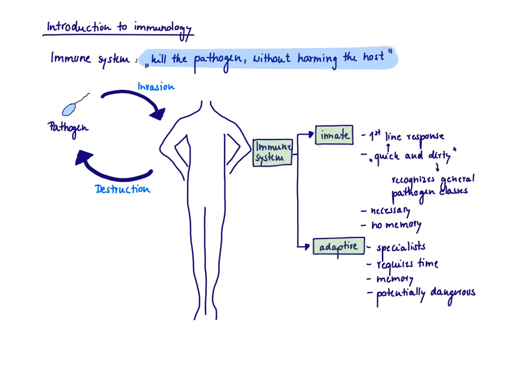So let's just talk generally about what is immunology all about. If I would need to summarize the immune system in one sentence, I would say it's all about killing the pathogen without harming the host. So the immune system is a collection of cells, tissues, and molecules that all act together with this one goal: kill the pathogen. We are constantly threatened by pathogens through the air, through the gastrointestinal tract, and they constantly try to invade us. But we have an immune system that tries to destroy this pathogen, to protect us.